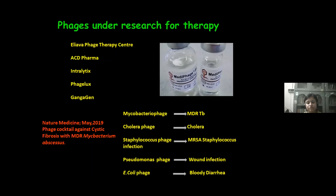There are several companies which are now producing phage cocktails for the treatment of multidrug-resistant bacterial infections. They are Eliava Phage Therapy Center, ACD Pharma, Enterolytics, Phage Lux, and Gangagen. They are producing phages like mycobacterial phage for MDR-TB, cholera phage for cholera, staphylococcal phage for MRSA staphylococcus infection, Pseudomonas phage for wound infection, and E. coli phage for bloody diarrhea.